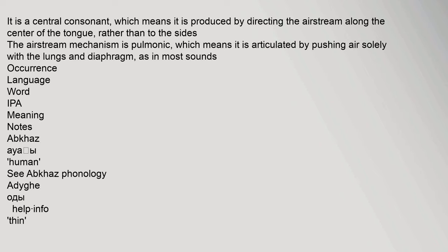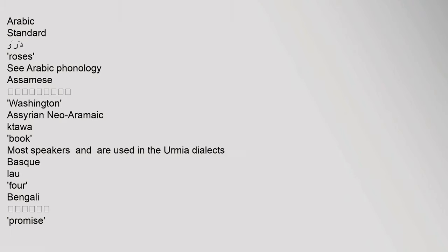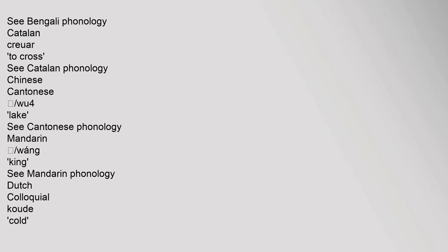Occurrence — Language, Word, IPA, Meaning, Notes: Abkhaz (see Abkhaz Phonology); Arabic Standard — 'ward' meaning 'roses' (see Arabic Phonology); Assamese — 'rasbintana'; Assyrian Neo-Aramaic — most speakers, used in the Urmia dialects; Basque; Bengali (see Bengali Phonology); Catalan (see Catalan Phonology); Chinese Cantonese — 'wuh' meaning 'lake' (see Cantonese Phonology); Mandarin — 'wang' meaning 'king' (see Mandarin Phonology); Dutch Colloquial — 'koud.'